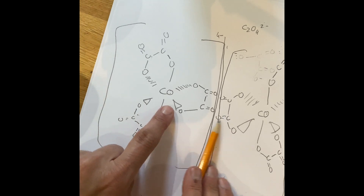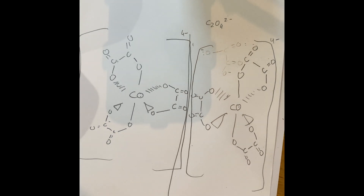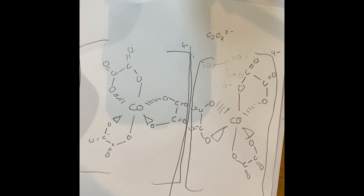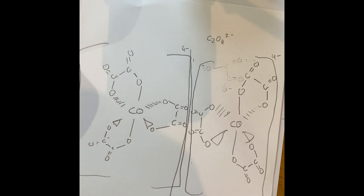They are optical isomers because they are non-superimposable mirror images of each other. You can see they are mirror images looking at each other — that's the example you can use, though apologies for the large drawing.